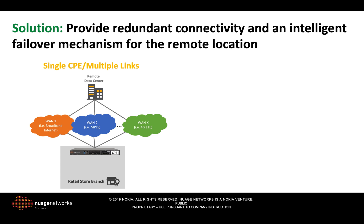First, we may have the single CPE, multiple WAN links redundancy mode. In this case, we may easily recover from the failure of one or multiple WAN links, and the Nuage Network Services Gateway will automatically handle the failover between different links. Various WAN link types — such as broadband links, MPLS, or 4G LTE — are supported, and can be used either as active-active or active-passive. There is only one CPE in this case, so we are not protected against its failure.